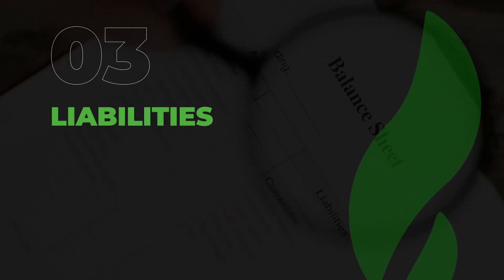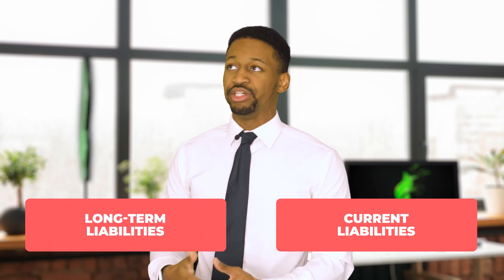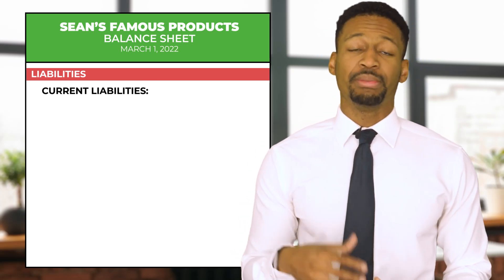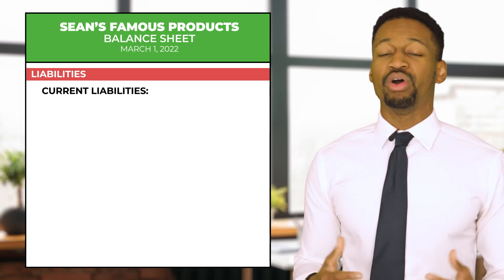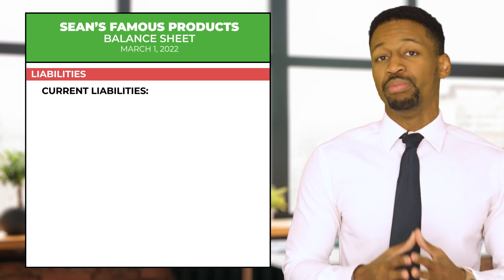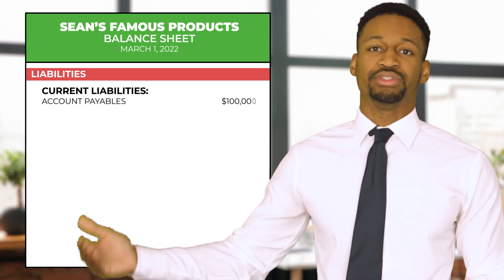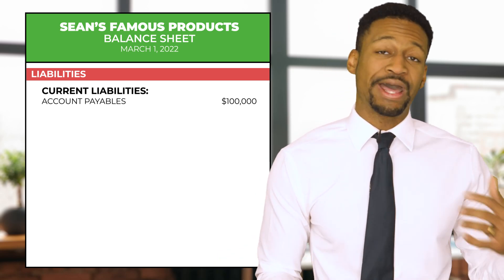Now let's move on to number three: liabilities. Liabilities are obligations that a company owes to third parties. Just like assets, you have current liabilities and long-term liabilities. Current liabilities are obligations you expect to pay back within 12 months. One example in our balance sheet is accounts payable of $100,000 — these are invoices your company needs to pay within 12 months, usually within three months.